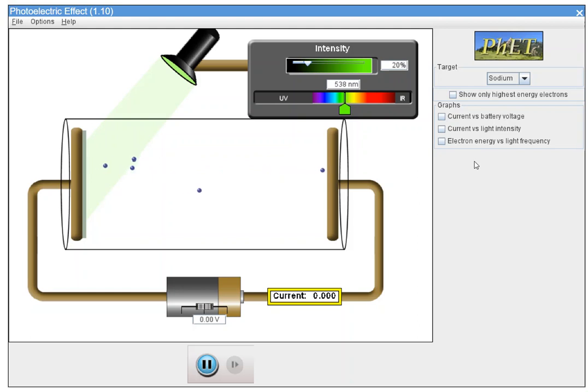So that frequency, that corresponding frequency, is called threshold frequency. And that is also known as the work function. Work function is the minimum energy required to allow the electrons to be ejected from the surface of the metal.